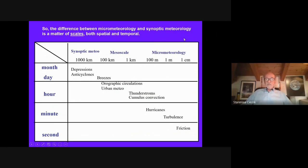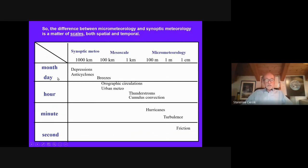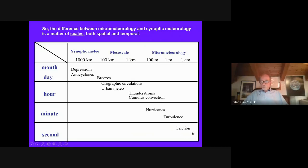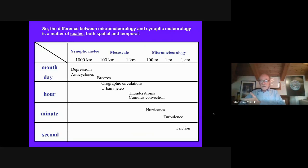Spatial and temporal scales are correlated with each other. This scheme describes this aspect very well. You have the synoptic meteorology, which extends over hundreds or thousands of kilometers with characteristic periods of more than one day — depressions, anticyclones, and so on. Then you have the mesoscale: breezes, orographic circulations, urban meteorology. At the right end, you have the micrometeorological range where you have turbulence, and at the very end, friction, where eddies dissipate smaller and smaller until they dissipate as thermal energy.